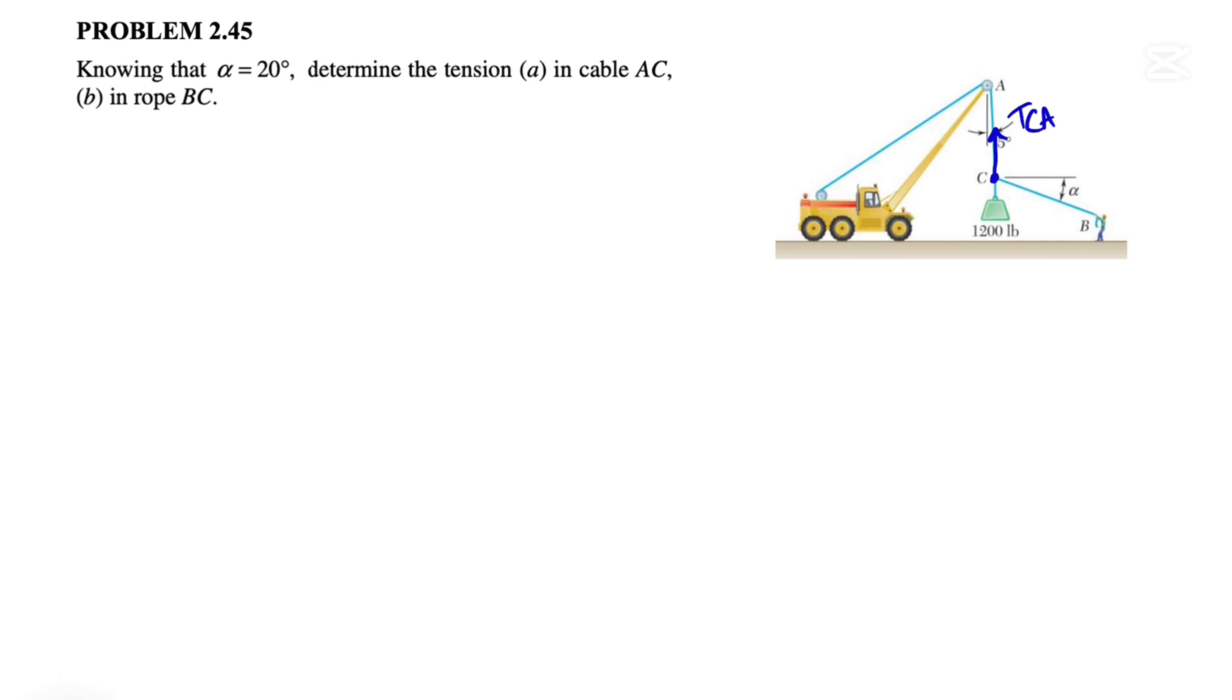we basically have two different tensions. The tension in CA or AC, it really doesn't matter, and the second tension is TCB. And we obviously have the weight of 1200 pounds. So since we are in equilibrium, the sum of all these forces has to be zero.